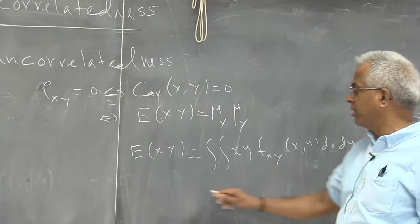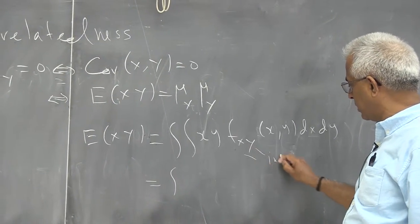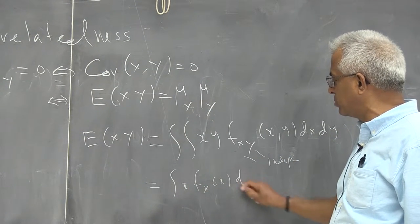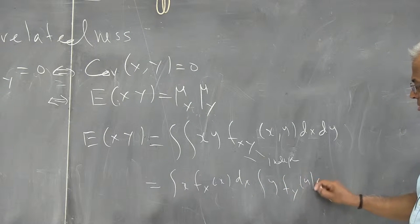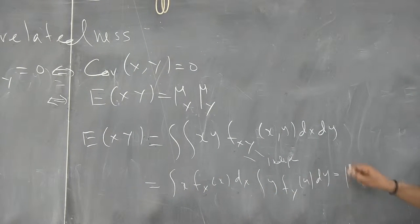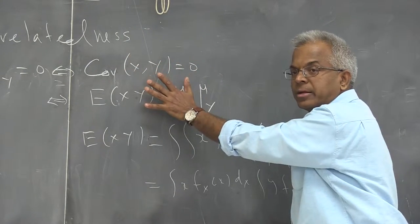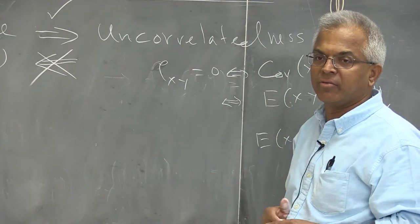Of course, if x and y are independent, this becomes separable — the joint density function is the product of the marginals. Consequently, this becomes the product of two integrals, and each integral is just the mean. So we get this for free. If they are independent, this is automatic. That means independence always implies uncorrelated random variables.